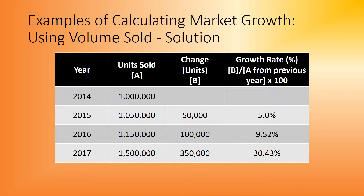To calculate market growth, you work out the change in units from the previous year, divide by the total number of units sold in the previous year, then multiply by 100. It's essentially: small divided by large, times 100. For example, in 2015 there were 50,000 more units sold; divide that by 1,000,000 and times by 100 gives 5% growth. In 2016 there were 100,000 more units sold compared to the year before; divide by 1,050,000 and times by 100 gives approximately 9.52% growth, and so on.